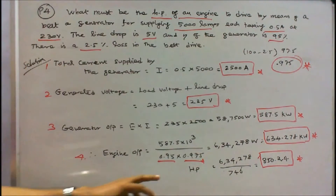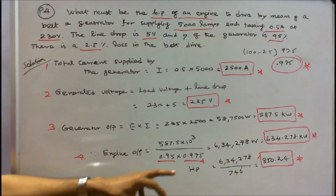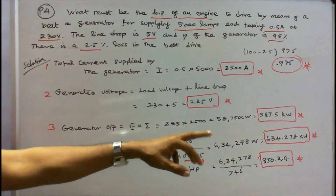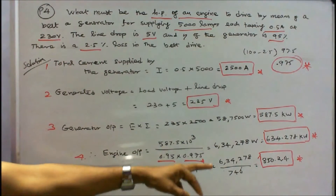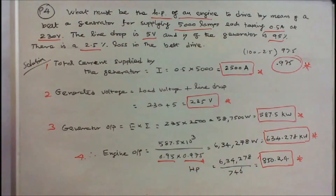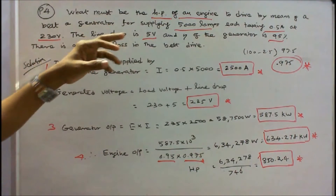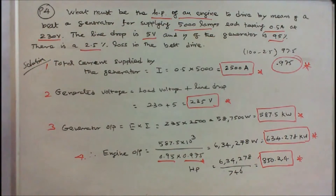We can find horsepower of the engine. HP is equal to 634.278 into 10 power 3 divided by 746, that is equal to 850.24 horsepower. Therefore horsepower of the engine is 850.24.